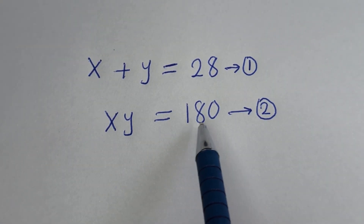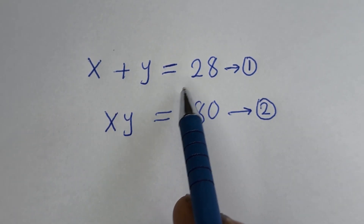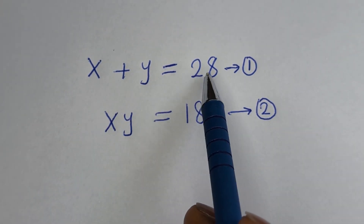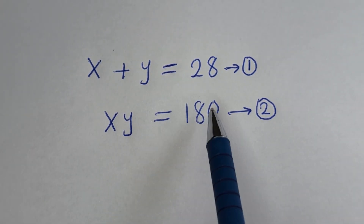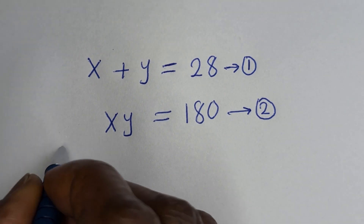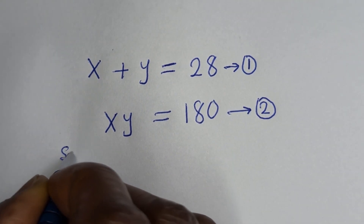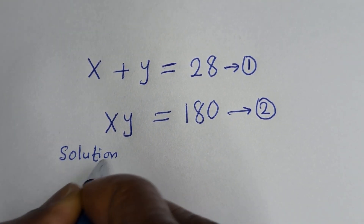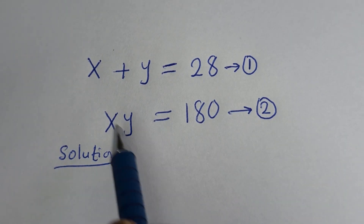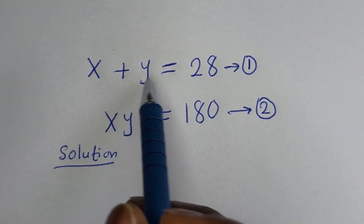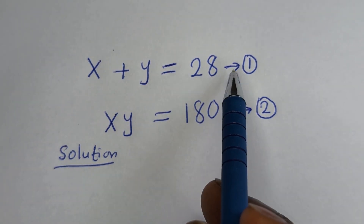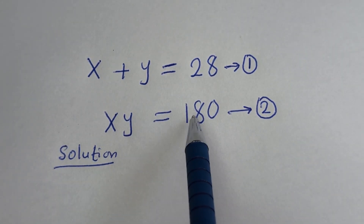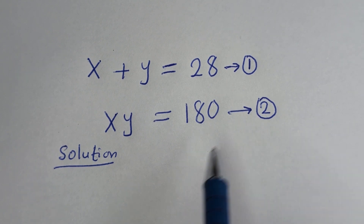Hello, how to solve for S and Y in this equation. S plus Y is equal to 28, S times Y is equal to 180. Solution. From here, we can see that S plus Y is equal to 28 — this is equation 1 — and S times Y is equal to 180 — this is equation 2.